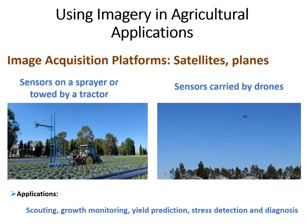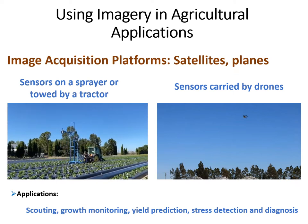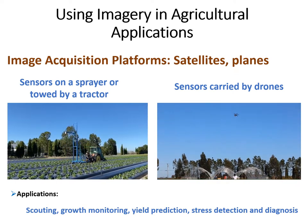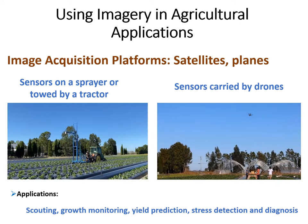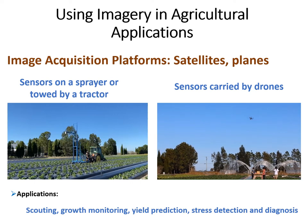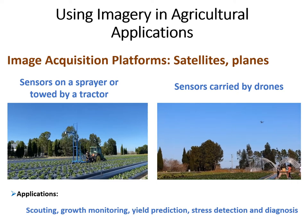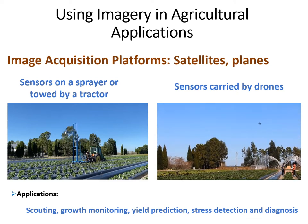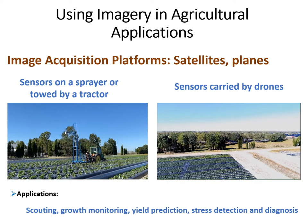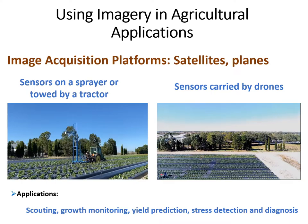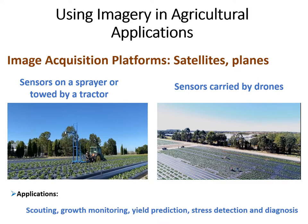Before I start introducing different applications where imagery were used, I would like to show a couple of platforms where cameras capable of capturing high-resolution imagery can be mounted on. In the left picture we can see a platform towed by a tractor in the field where cameras are mounted, and in the right picture we can see a camera mounted on a drone. Those images can be used in different applications such as field scouting, growth monitoring, yield prediction, stress detection, and diagnosis.